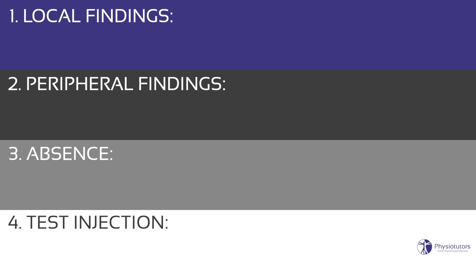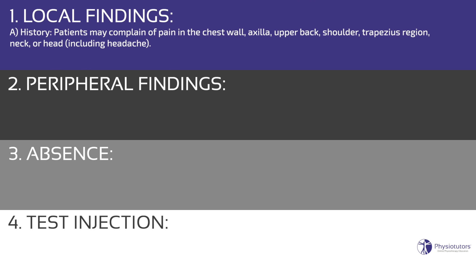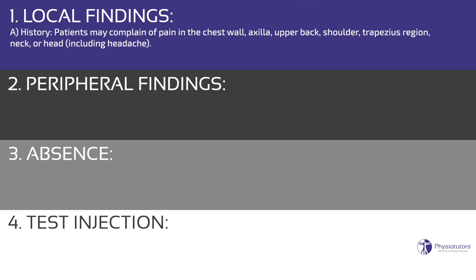Criterion 1: Local findings. a. History — symptoms consistent with irritation or inflammation at the site of compression, either at the scalene triangle or the pectoralis insertion, along with symptoms due to referred pain in the areas near the thoracic outlet. Patients may complain of pain in the chest wall, axilla, upper back, shoulder, trapezius region, neck, or head including headache.